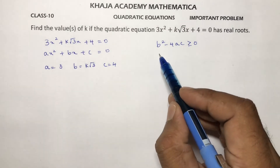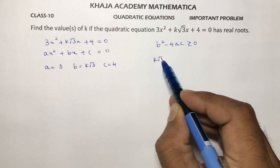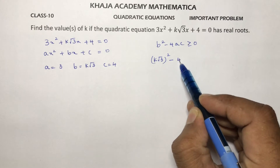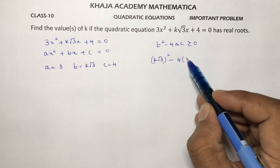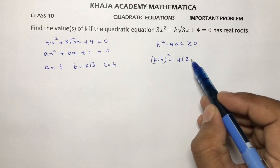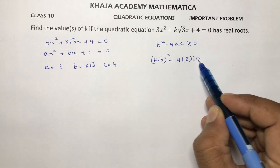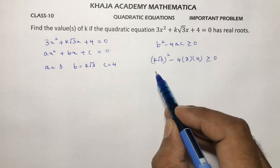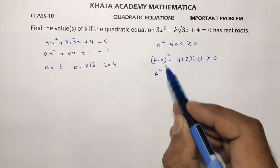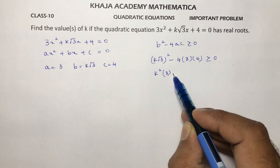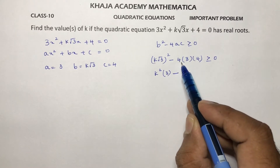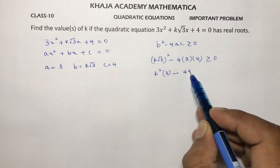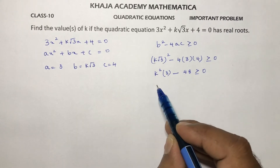Substituting: (k√3)² - 4·3·4 ≥ 0. So k²·3 - 48 ≥ 0, which gives 3k² - 48 ≥ 0.